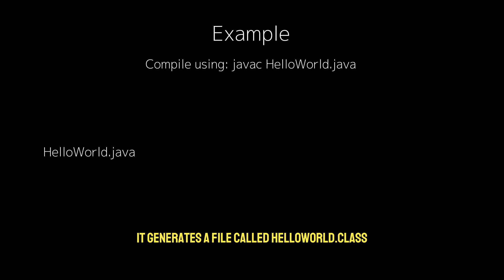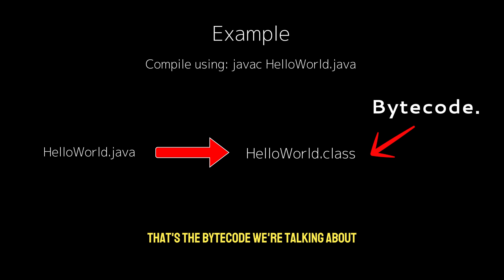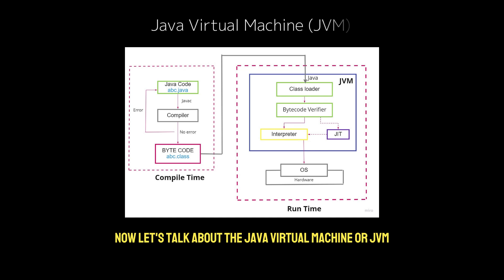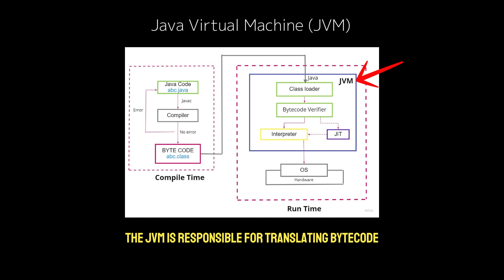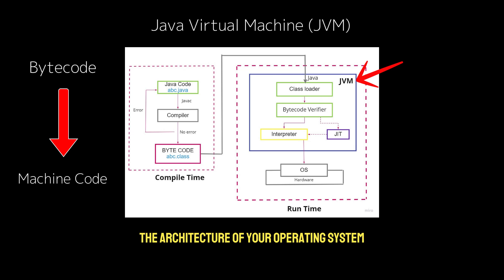For example, if we compile this hello-world.java file, it generates a file called hello-world.class. That's the bytecode we're talking about. Now let's talk about the Java Virtual Machine, or JVM. The JVM is responsible for translating bytecode into machine code that your specific device can understand and execute. It's the translator that takes the universal bytecode and adapts it to the architecture of your operating system and hardware. It's fully multi-platform.